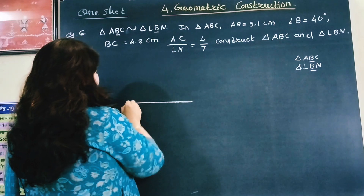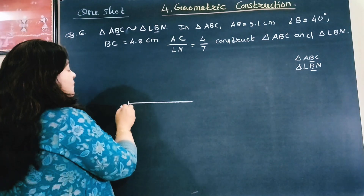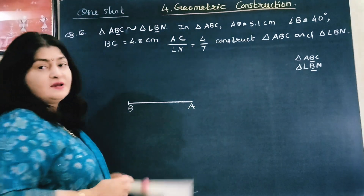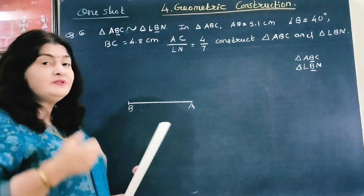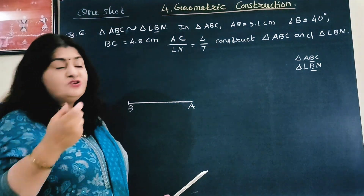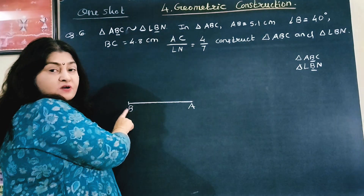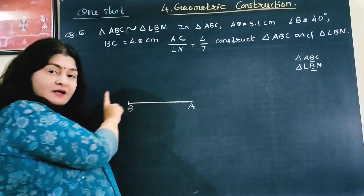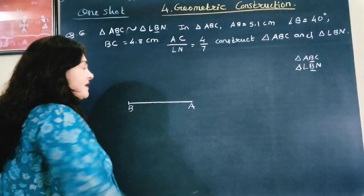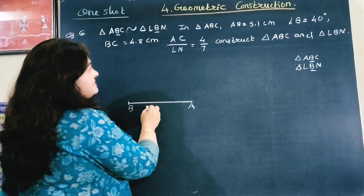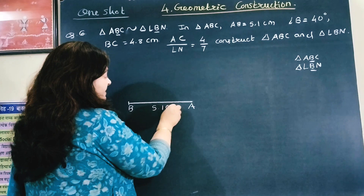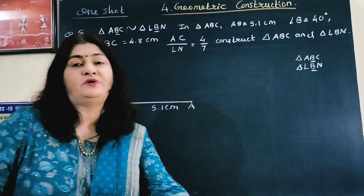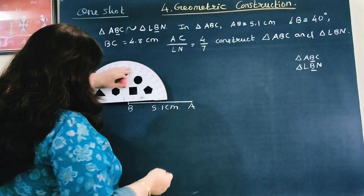This is 5.1 and we will write BA because B is the common vertex — whatever the common vertex is, it should always be kept at the left. So don't write AB; write BA with B at left. The base measure is 5.1 cm. Now angle B is 40 degrees, so let us take a protractor and draw the 40 degree angle.